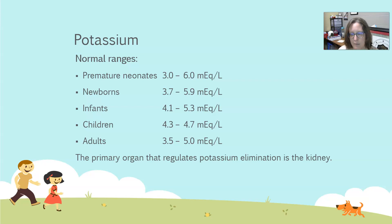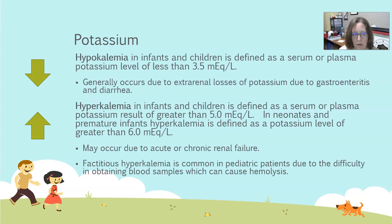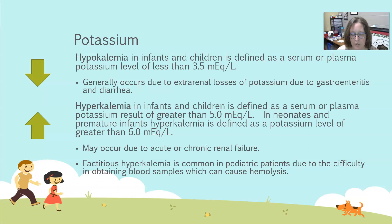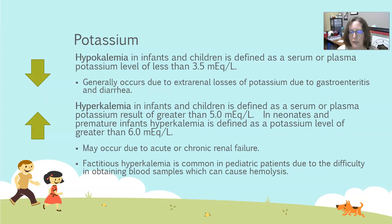The primary organ that regulates potassium elimination is the kidney. We don't have a mechanism to conserve potassium — we only eliminate it. Hypokalemia, or low potassium levels in blood in infants and children, is defined as a serum potassium less than 3.5 milliequivalents per liter. Again, they're using the adult cutoff, but take into consideration the variation in ranges when looking at a pediatric population and what age they are. Generally, hypokalemia occurs due to extra-renal loss, and the most common cause is gastroenteritis and diarrhea — if they have diarrhea or vomiting, that could drive their potassium down.